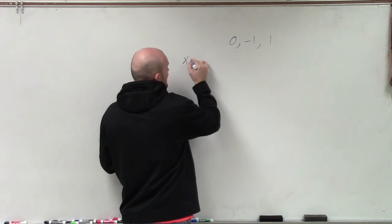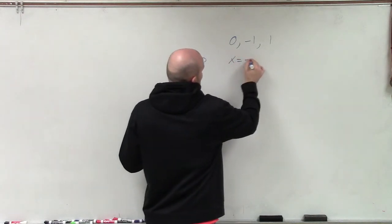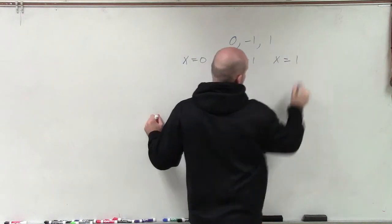Therefore, for each zero, we can write as x equals 0, x equals negative 1, and x equals positive 1.